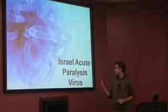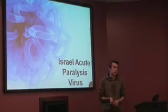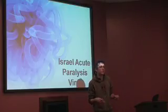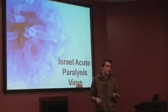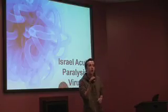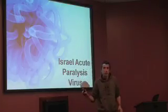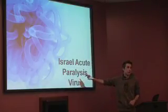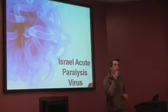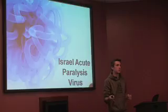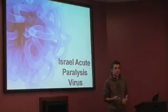For instance, the Israel Acute Paralysis Virus. Obviously, this originated in Israel, and it's found in so many beehives. Now, here's the thing. Every single colony that suffers from CCD was positive for this virus. But there's a catch. A lot of colonies that didn't suffer from CCD still have this virus. So, clearly, this cannot be the cause.